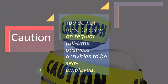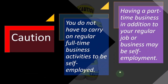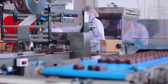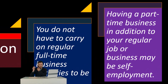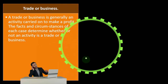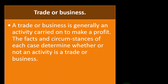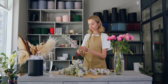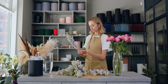You do not have to carry on regular full-time business activities to be self-employed — you can have a side job or just do some gig work, and yes, the IRS wants their share whether you get a 1099 or not. Having a part-time business in addition to your regular job may be self-employment. A trade or business is generally an activity carried on to make a profit. This often comes up with the fuzzy question of hobby versus business — if you're in business to make a profit, it's generally going to be a business.